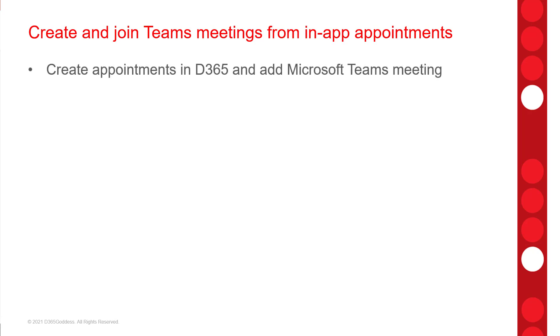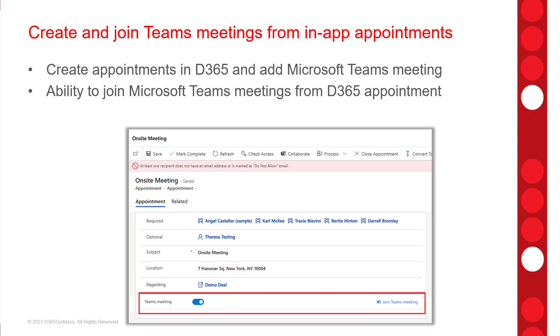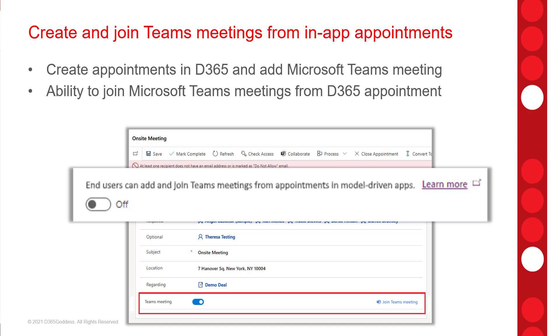The next feature is one I'm very excited about, and it really shows that Microsoft is investing in the integration between Dynamics 365 and Microsoft Teams. With this feature, users will be able to create an appointment in Dynamics 365 and add a Microsoft Teams meeting to the appointment. This is going to save users a lot of time because they're no longer forced to create Microsoft Teams meetings outside of Dynamics 365. Users will also have the ability to join a Teams meeting from a Dynamics 365 appointment or from the timeline directly. Keep in mind that this can be turned on or off in the environment settings in Power Platform Admin Center.